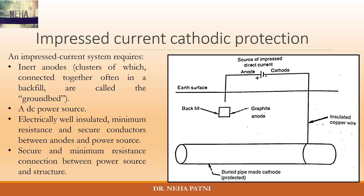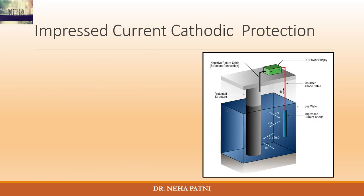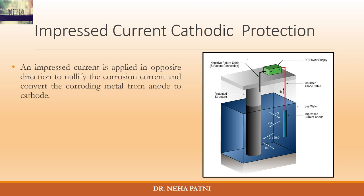You have to set up a backfill and connect your cathode with the anodic portion with proper insulation in between, and there has to be a source of impressed current. When you have an impressed current, it is applied in the opposite direction to nullify the corrosion current.